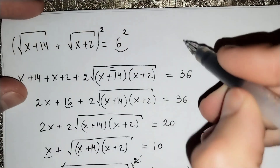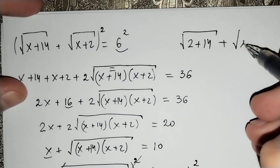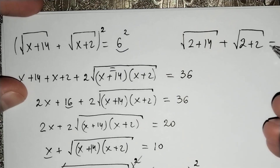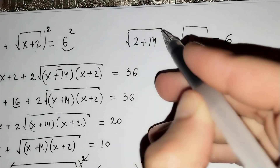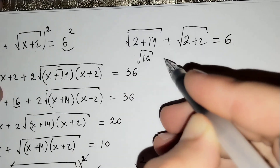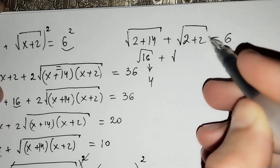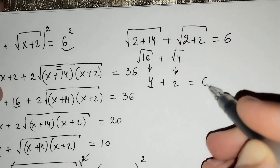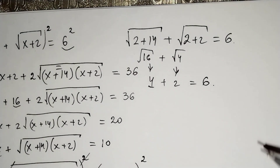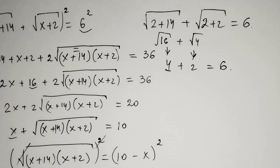Let's check: the square root of 2 plus 14 plus the square root of 2 plus 2 equals 6 — is this true? The square root of 16 equals 4 and the square root of 4 equals 2, and 4 plus 2 equals 6. That's correct, so our solution is true. Thanks for watching — don't forget to subscribe and thumbs up the video.